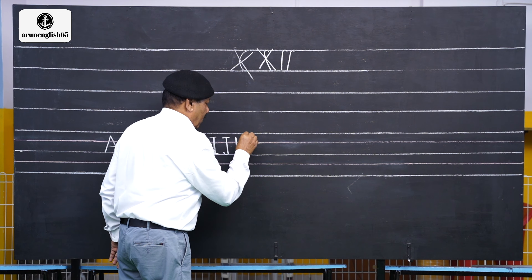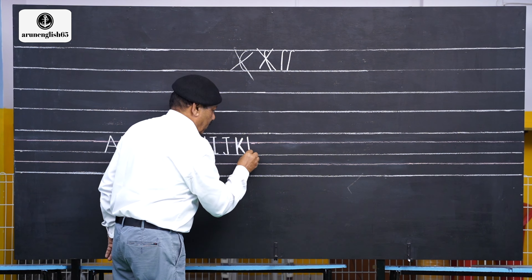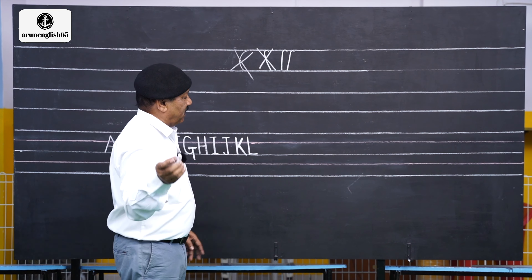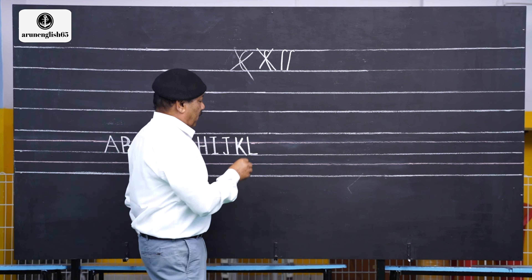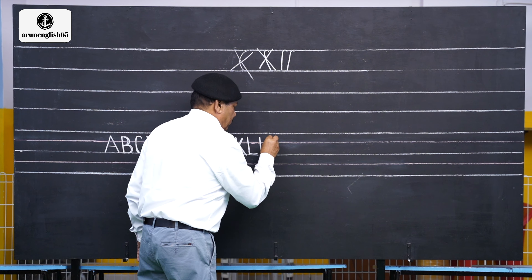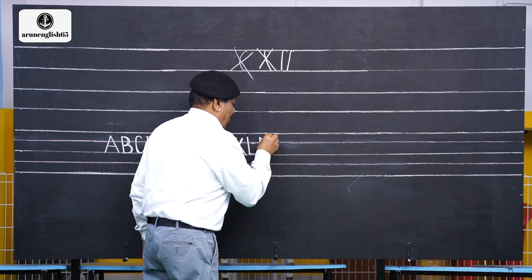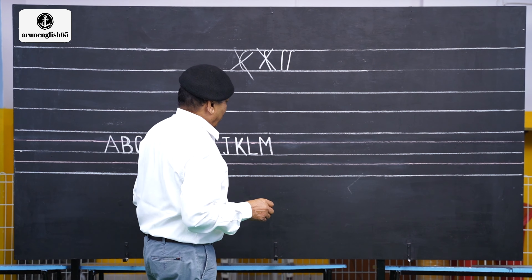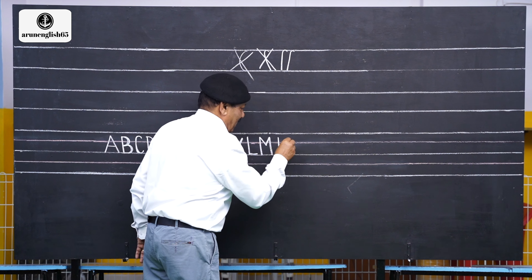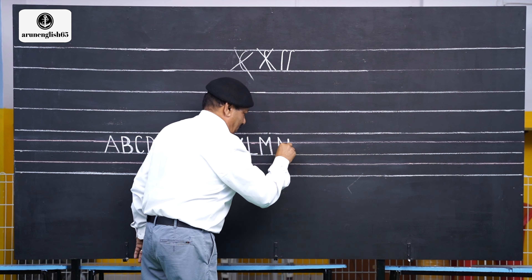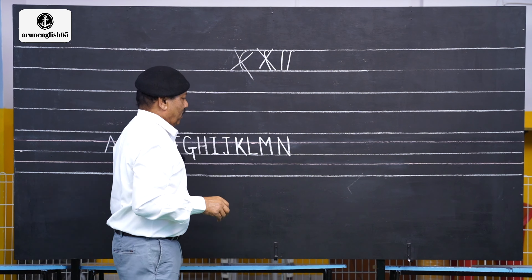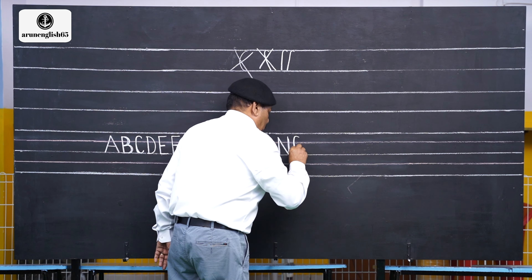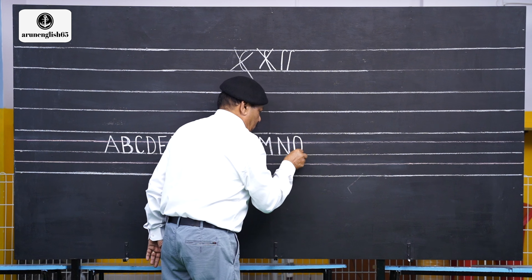L — write it straight down. M — draw two lines first, then write like a V shape in the middle — that is M. Then let's go to N. N — then O. O — write it as a full round circle.